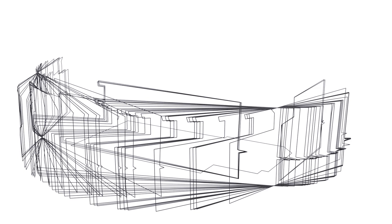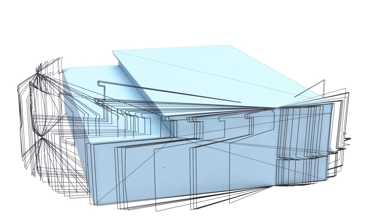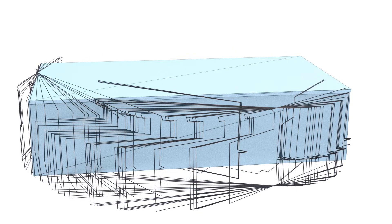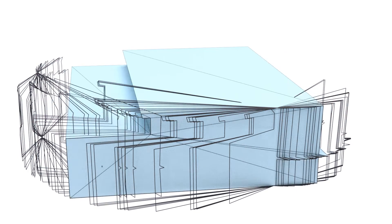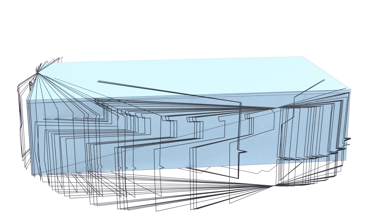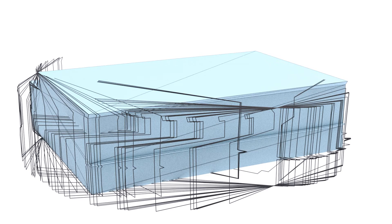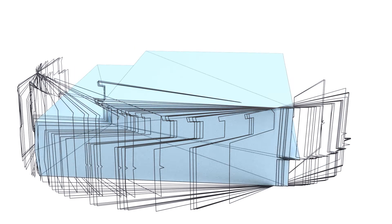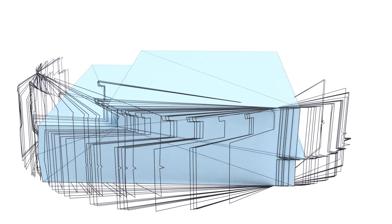For each silhouette, we perform 2D simplification and decompose the silhouette into connected 2D loops. Each loop is then extruded as a 3D primitive.